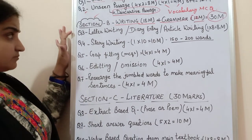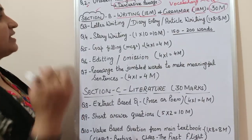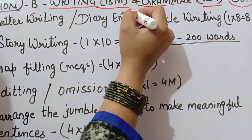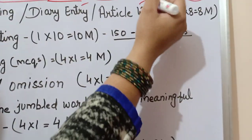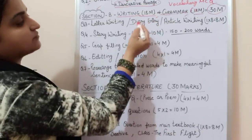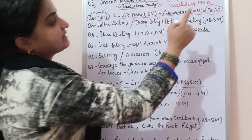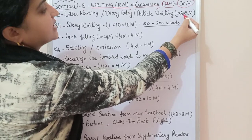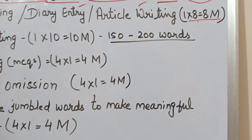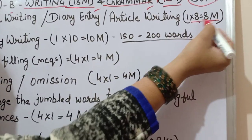Question number three is letter writing, or diary entry, or article writing. You may get options, and you have to attempt only one. It is one question and carries eight marks.